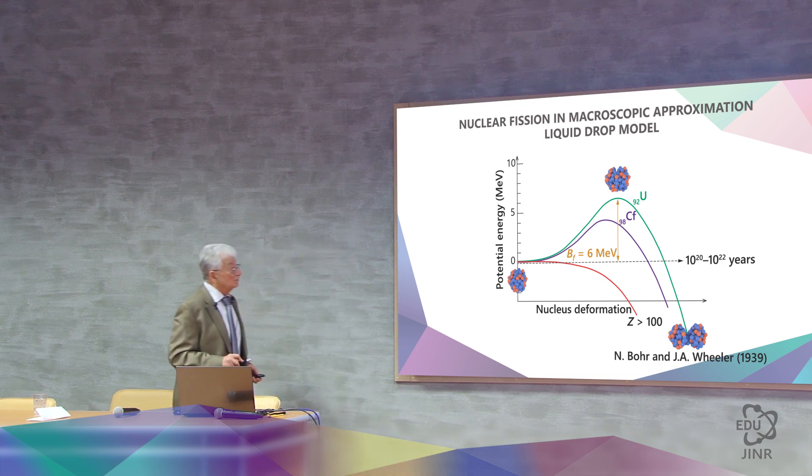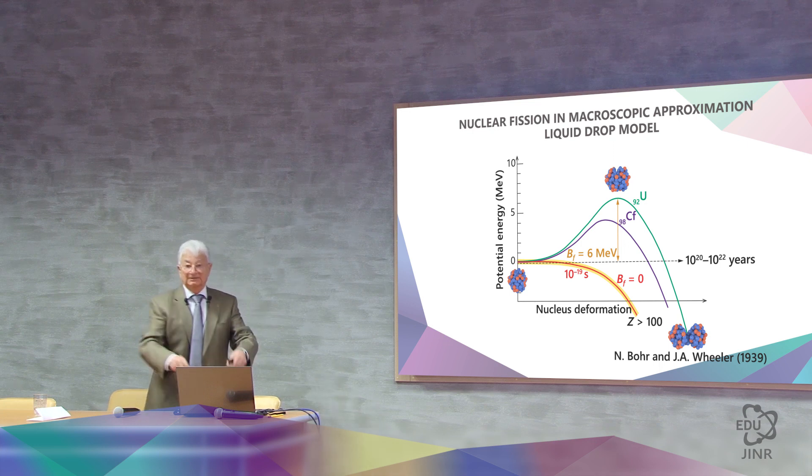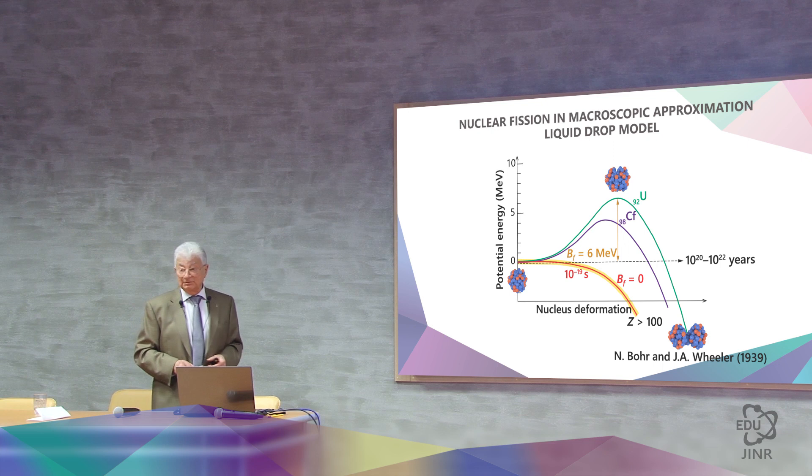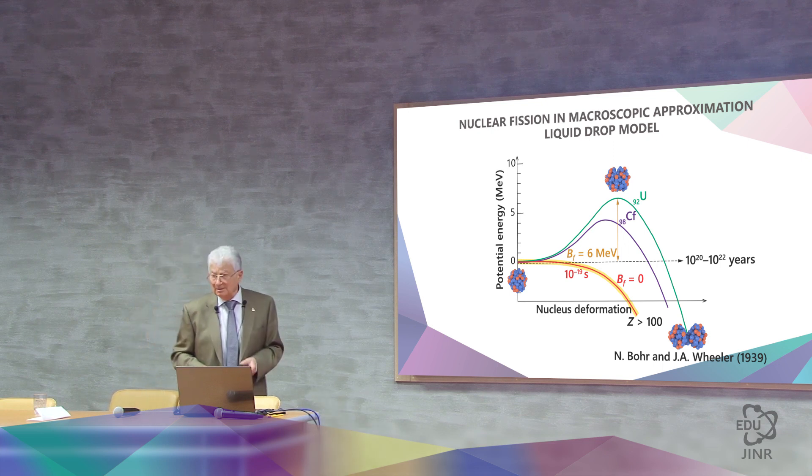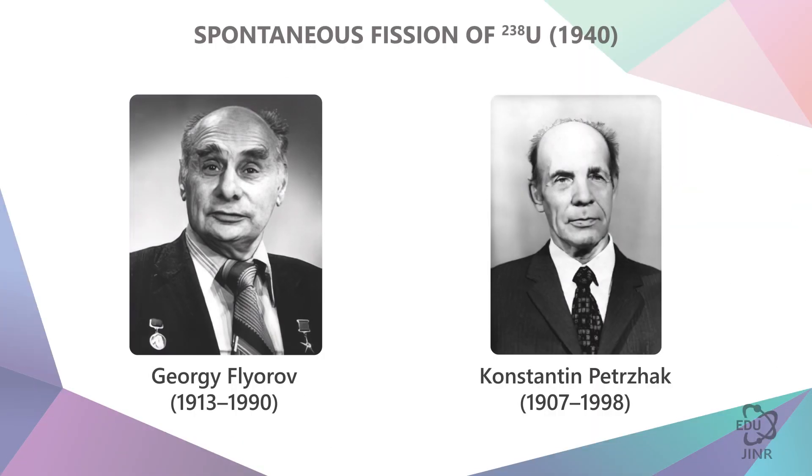If there is no such barrier, then the spherical shape itself will be unstable with respect to division into two fragments, and the deformation process without any barriers to the point of rupture will occur in 10 to the power of minus 19 seconds. The difference is 50 orders of magnitude. Our world holds 6 mega electron volt. This is the barrier.